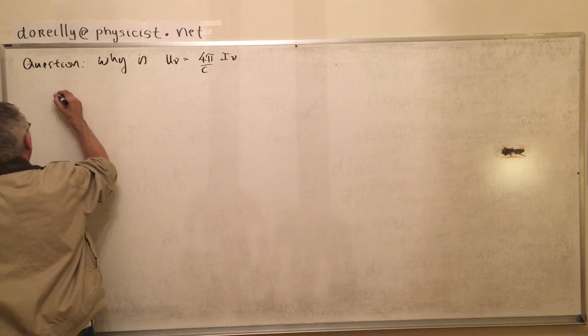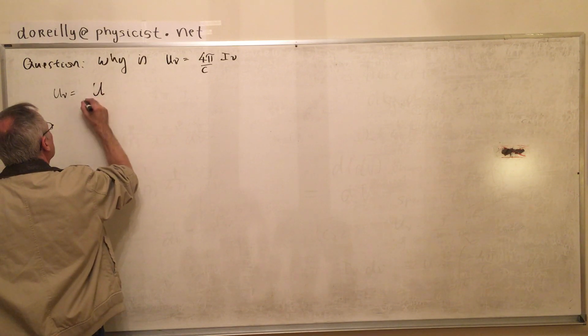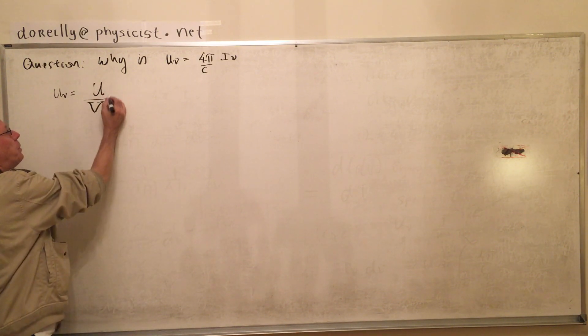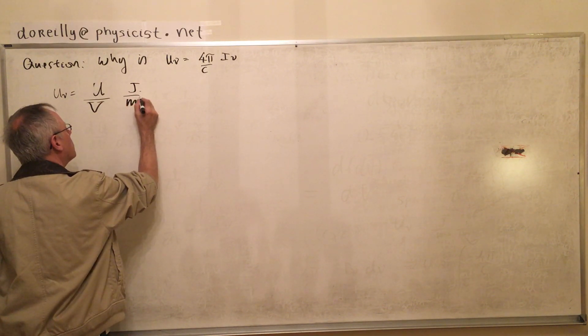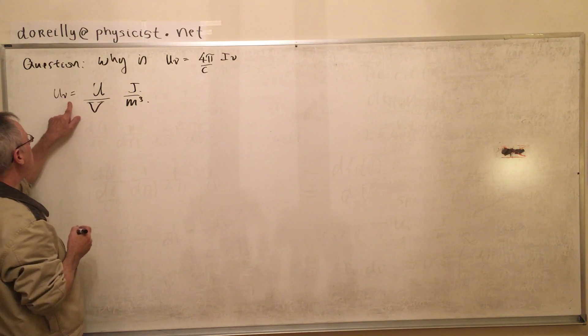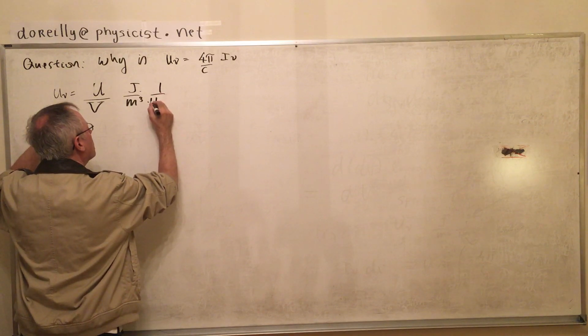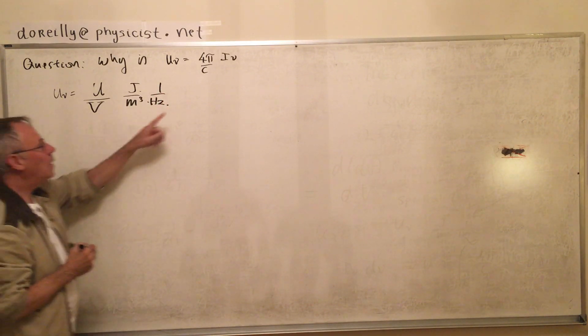So why is this the case? First of all, what is u_nu? It's the energy per unit volume, joules per cubic meter. But u_nu also has a spectral dependence.